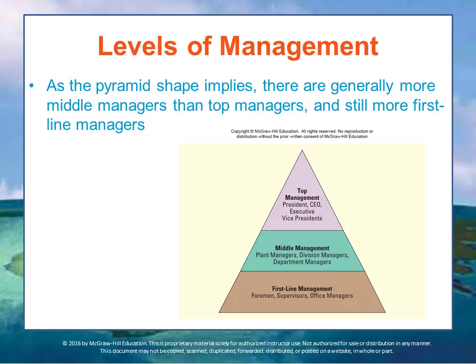As the pyramid shape implies, there are generally more middle managers than there are top managers, and more first-line managers and supervisors than there are middle managers. Very small organizations may only have one manager, typically the owner, who assumes the responsibility of all three of these levels. Large businesses have many managers at each level to coordinate the use of the organization's resources.